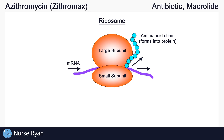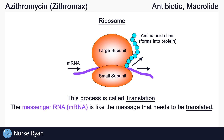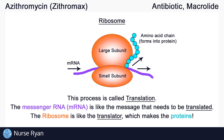So again, the subunits of ribosomes read instructions from mRNA and spit amino acids out the other end. This process is called translation. You can think of messenger RNA as just that — the message that needs to be translated. And the ribosome is like the translator, which takes that message and uses it to make proteins.